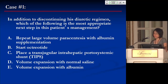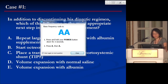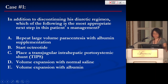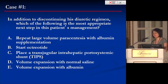So, in addition to discontinuing his diuretic regimen, which of the following is the most appropriate next step in this patient's management? Would you A, repeat large-volume paracentesis with albumin supplementation? B, start octreotide? C, place a TIPS? D, volume expand with normal saline? Or E, volume expand with albumin?